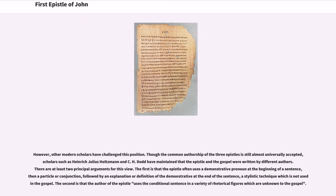The first is that the epistle often uses a demonstrative pronoun at the beginning of a sentence, then a particle or conjunction, followed by an explanation or definition of the demonstrative at the end of the sentence — a stylistic technique which is not used in the Gospel. The second is that the author of the epistle uses the conditional sentence in a variety of rhetorical figures which are unknown to the Gospel.